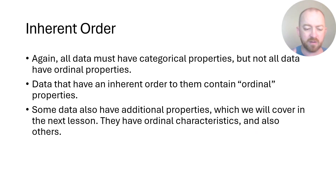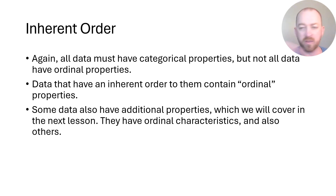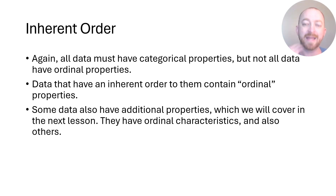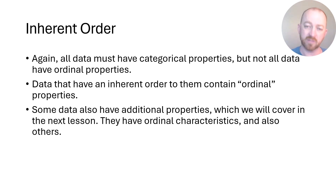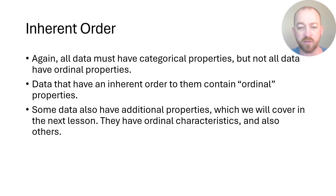To recap: all data with ordinal properties must also have categorical properties. Variables must take on more than one value, and those values must be able to distinguish from each other — otherwise it's not a variable. So all data are categorical at a bare minimum, and then some variables are more than that. Some variables have this inherent order or ranking to them — we call those ordinal properties or ordinal characteristics. There are some additional properties that some data can have as well, which we'll cover at another time.